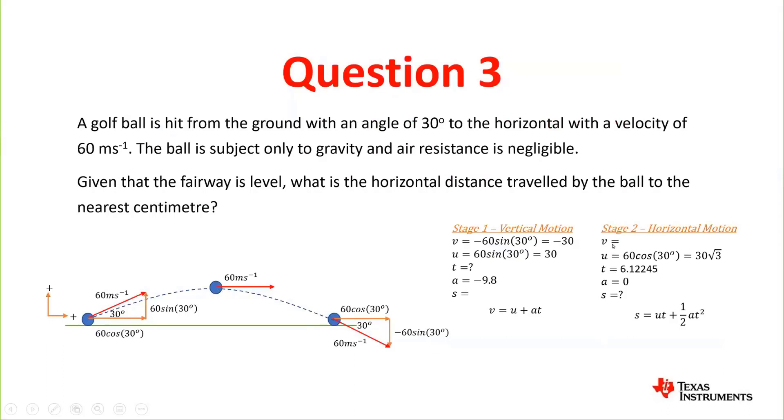This time we don't have to worry about the final velocity. We have the initial velocity is 60cos(30°) which is 30√3. The time we just worked out, 6.12. Acceleration is 0 because there's no acceleration going in the horizontal direction. Once we look at our variables, we find that the equation would be s = ut + ½at².